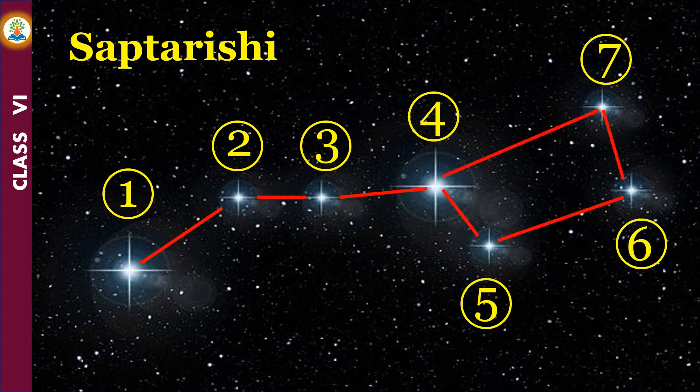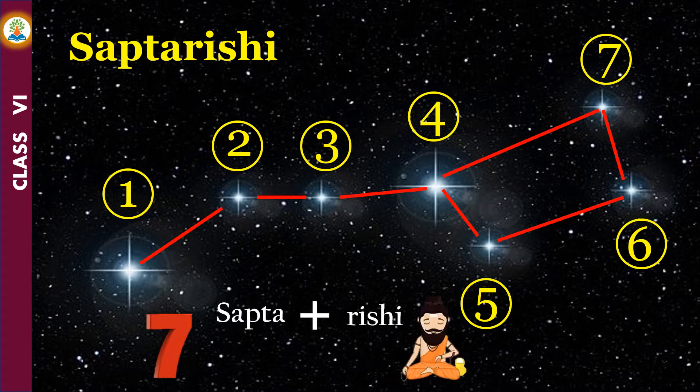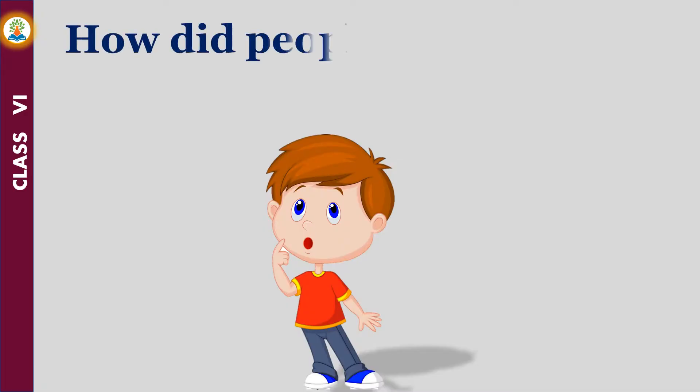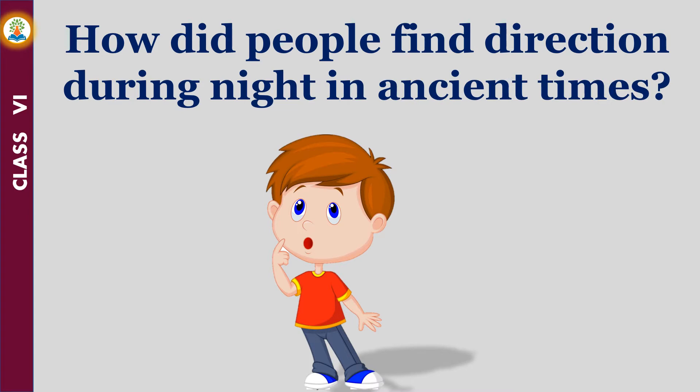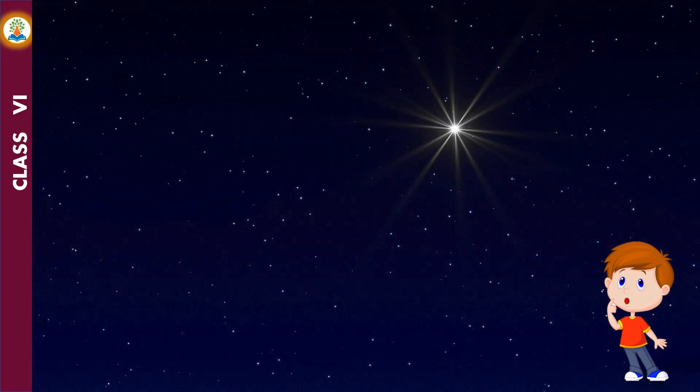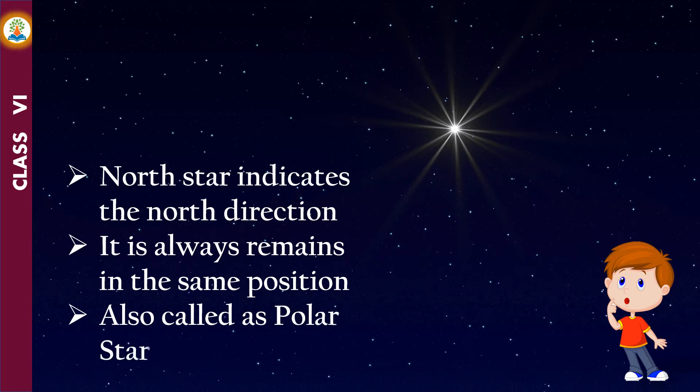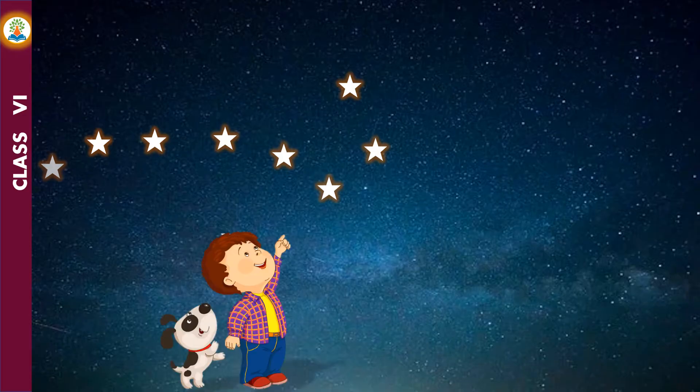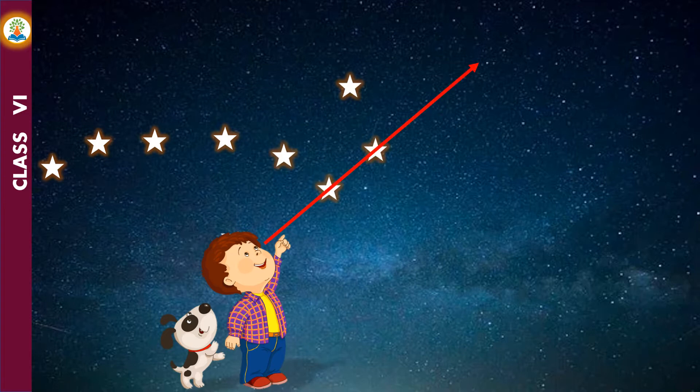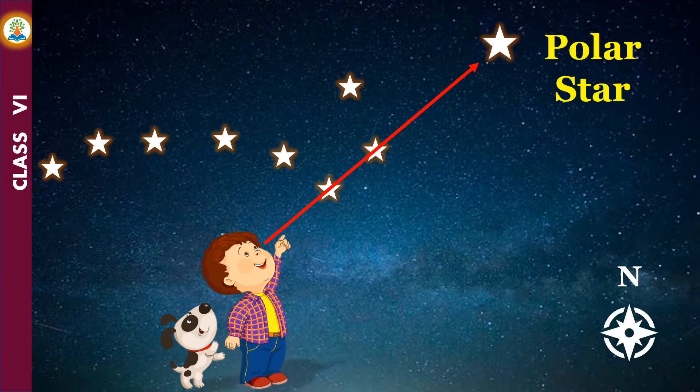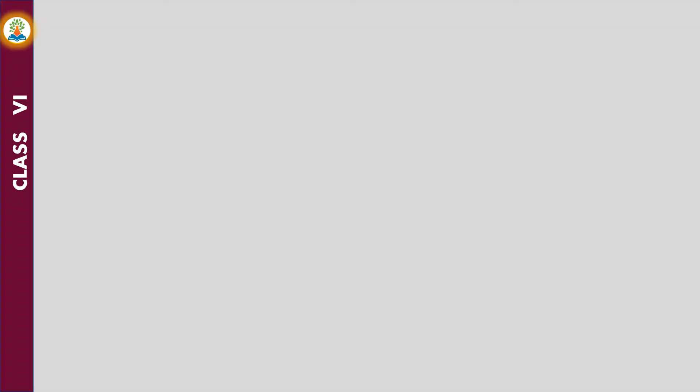It is a group of seven stars that forms part of Ursa Major constellation. Sapt means seven and Rishi means sages. In ancient times, people used to determine directions during the night with the help of stars. The North Star indicates the north direction. It always remains in the same position in the sky and is also called the Pole Star. We can locate the position of the North Star with the help of Saptarishi. If an imaginary line is drawn joining the pointer stars of Saptarishi and extended further, it will point to the Pole Star.